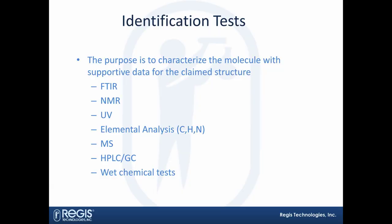Of those three categories, the first are identification tests. These are pretty much qualitative, with sometimes quantitative elements, and there are a variety of tests one can perform to characterize the molecule. No one technique can do it all, so usually one uses a combination: FTIR, NMR, UV, elemental analysis for composition, mass spec for molecular weight, retention time marking with chromatographic methods, and wet chemical methods. That's a general coverage of ID tests.